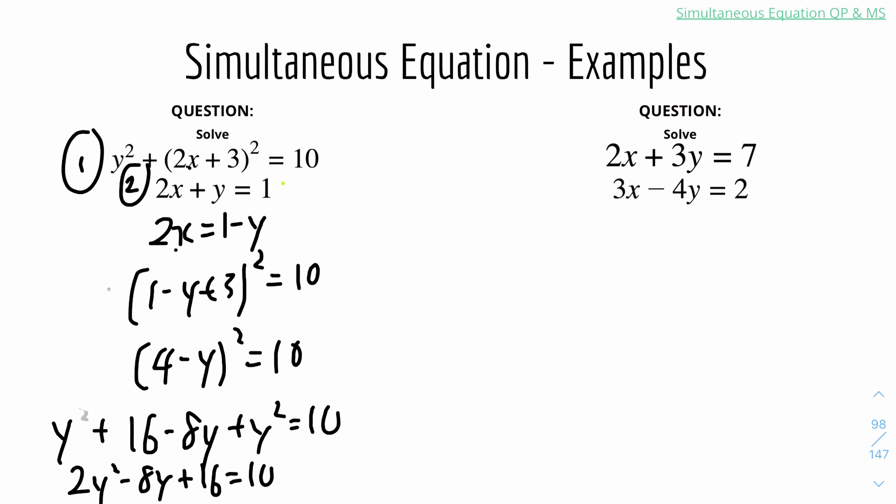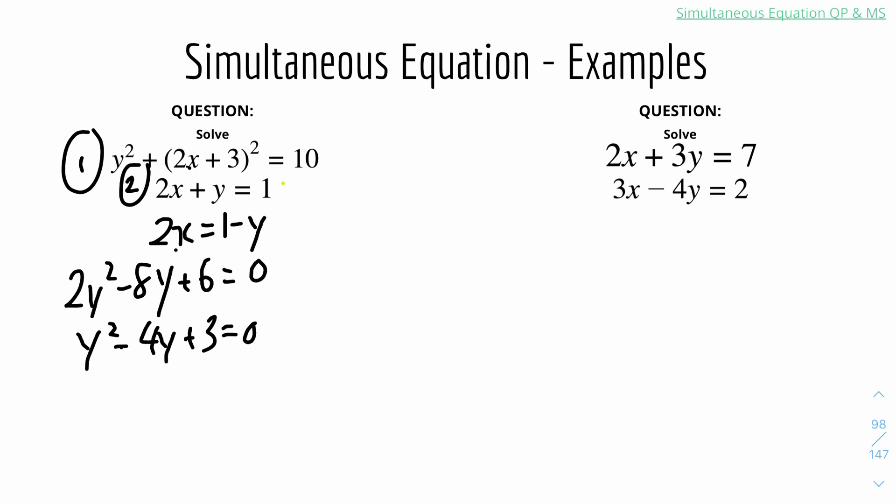Rearrange the equation to get 2y squared minus 8y plus 6 equals 0. We can further simplify this by dividing everything by 2. It will be y squared minus 4y plus 3 equals 0. Now you have to factorize the equation to get two values of y because it's a quadratic equation. It will be y minus 1 and y minus 3 equals 0. And therefore the y values will be y equals 1 and y equals 3.